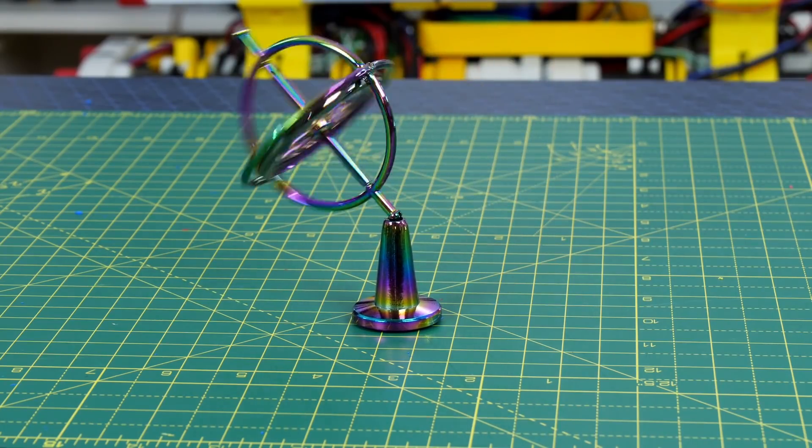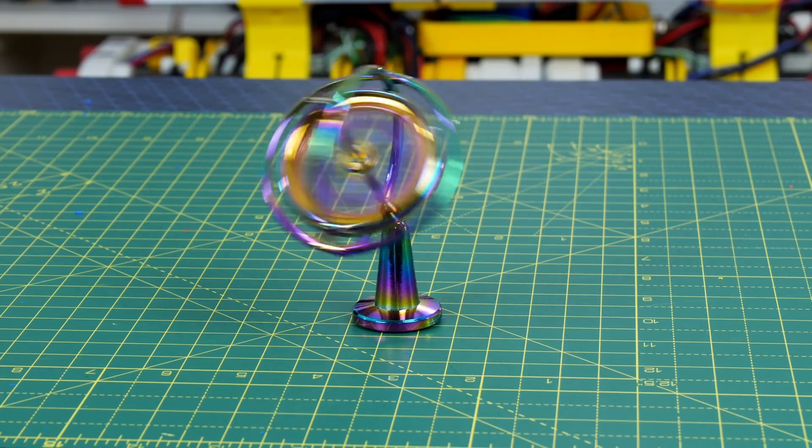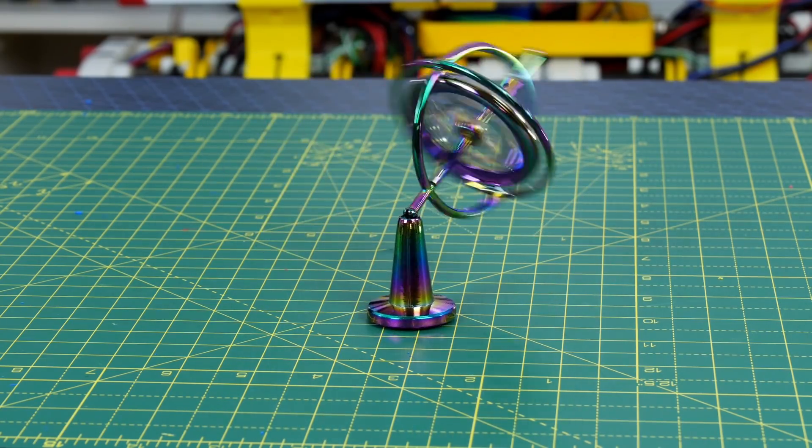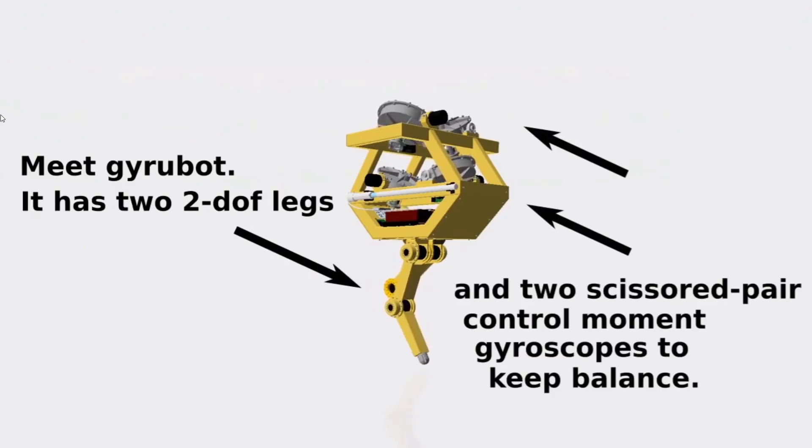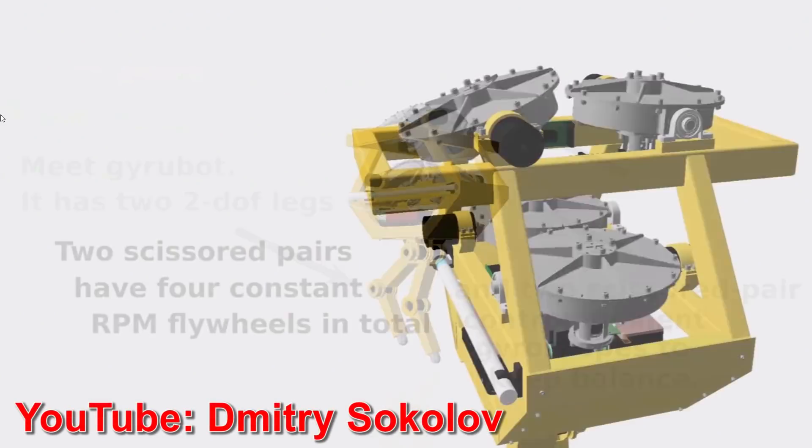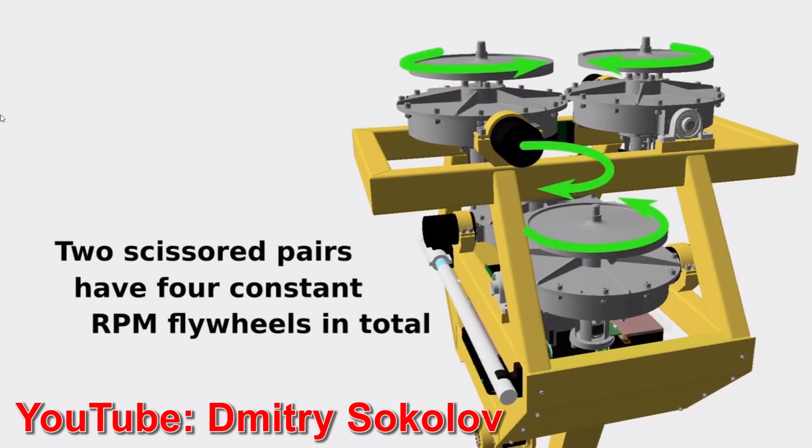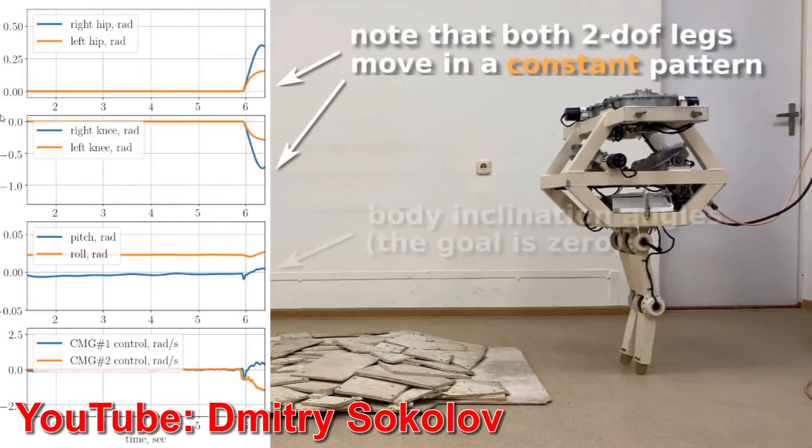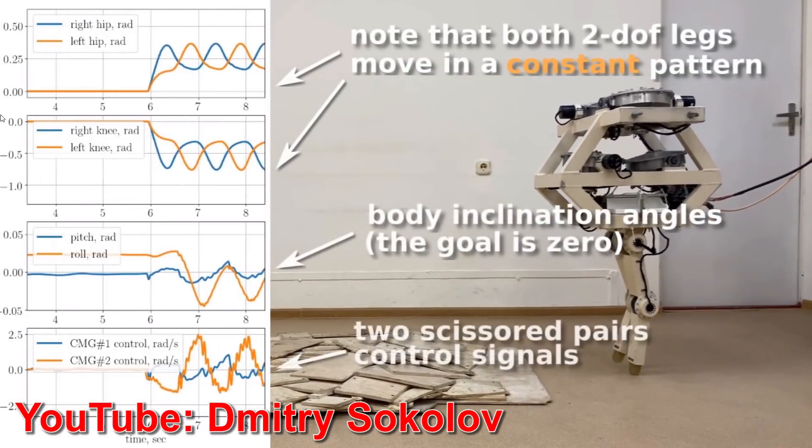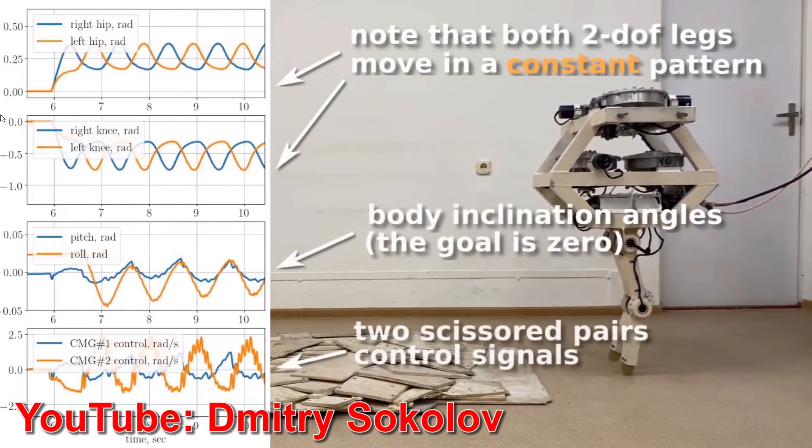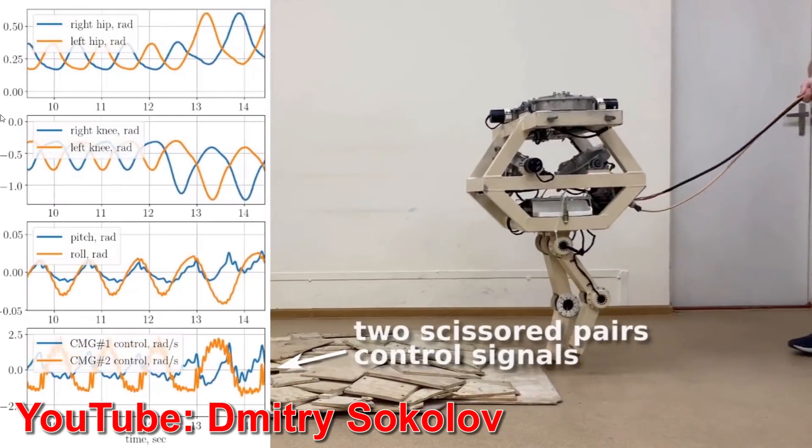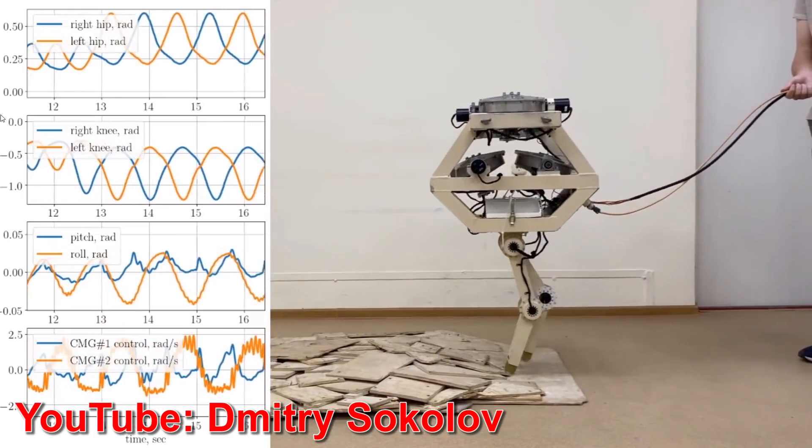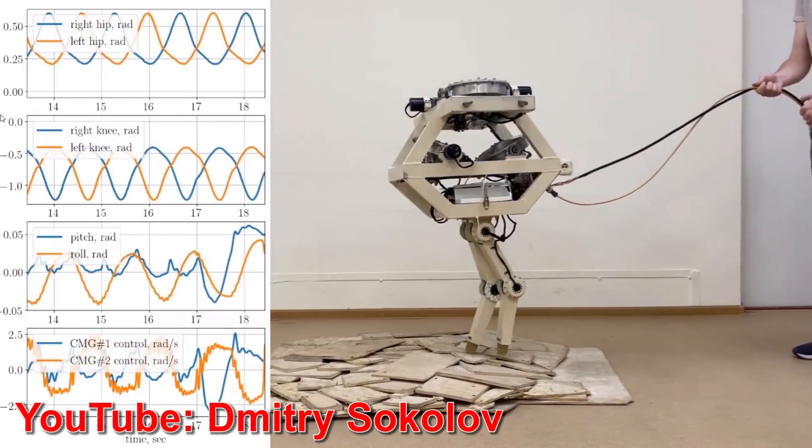One issue we still would have is that we would still get some rotation in yaw while the gyro is tilted as we got with our original gyroscopic precession example. However there are ways of compensating for this as Dmitry Sokolov has done so with GyroBot. This has two pairs of counter-rotating gyros which tilt in opposite directions making a scissor motion.